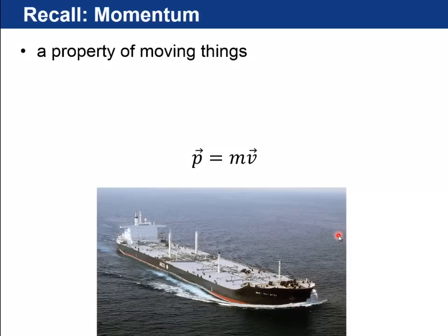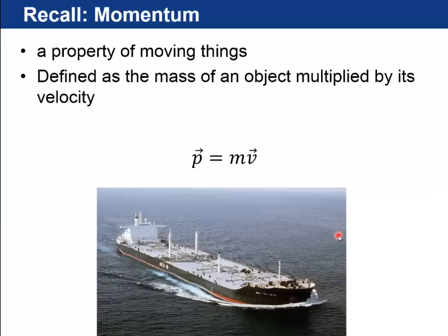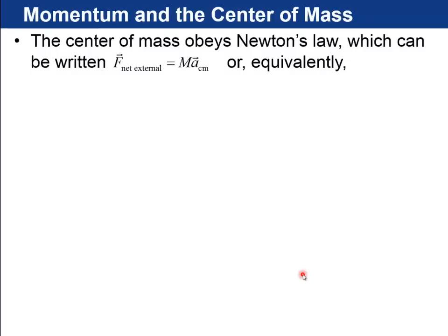So moving on now, I want to talk about momentum again. Remember, momentum is a property of moving things. It's defined, we defined it way back a few chapters ago, as the mass of an object multiplied times its velocity. Its equation is p equals mv. p is the vector symbol for momentum. The units are kilograms times meters per second. And this big tanker has a lot of momentum because it's moving at some high speed and it's got a huge mass.